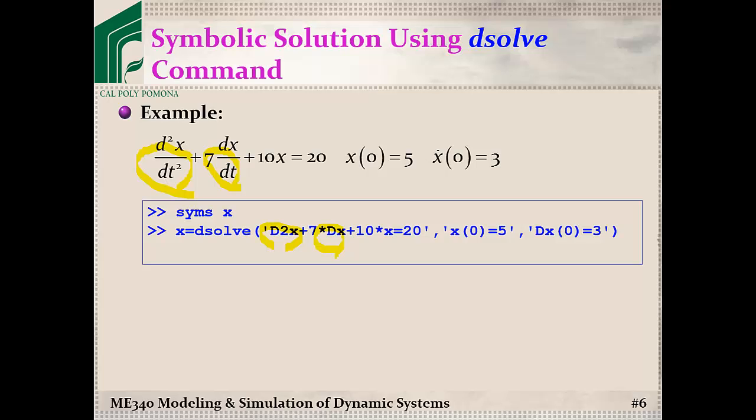For the first initial condition, x(0) will become 5, and then x dot, which is Dx(0), will become 3. Once you get the answer, you can use the pretty command for better display of the output. Now let's go to MATLAB to see actual implementation of these commands.